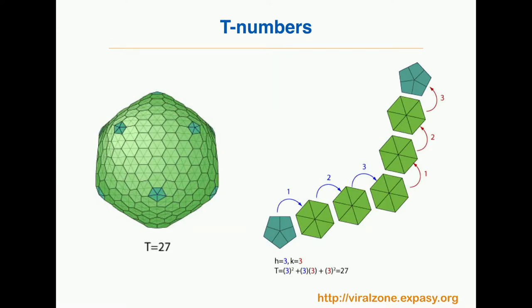The T numbers that are used to classify icosahedral viruses are measuring, basically, the distance between two pentamers on a particular lattice — the lattice of the hexagonal path.